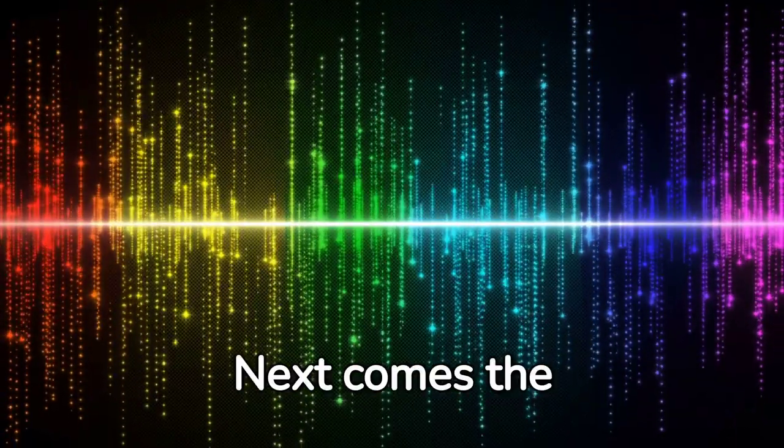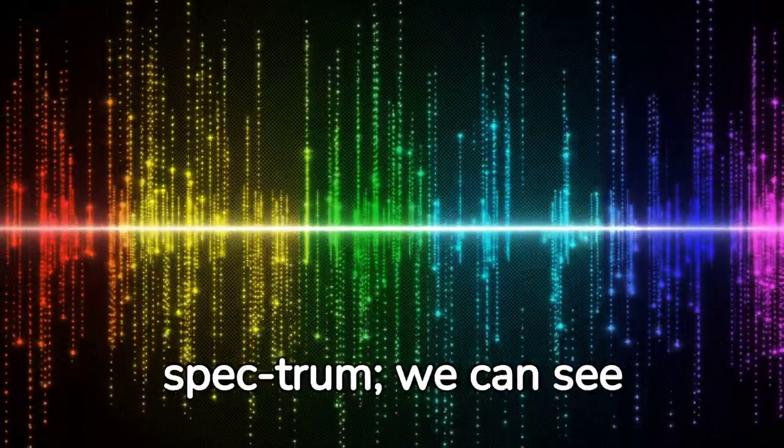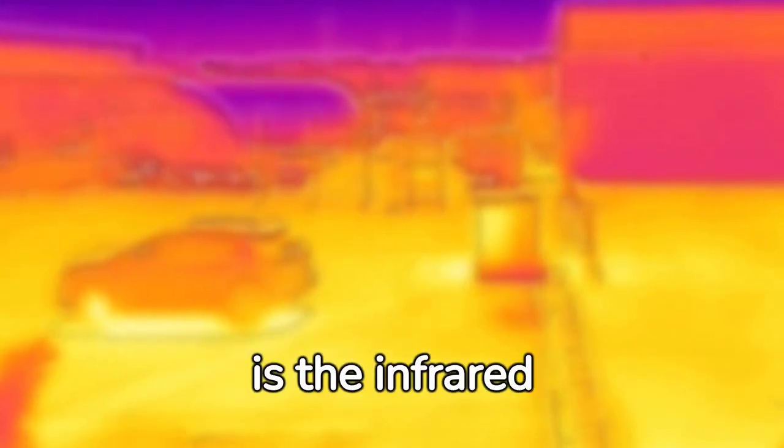Next comes the ultraviolet spectrum, then comes the visible light spectrum. We can see these waves. The waves get still longer and we can no longer see them. This is the infrared spectrum.